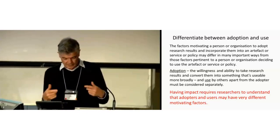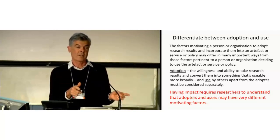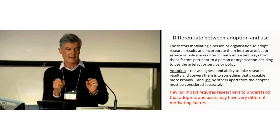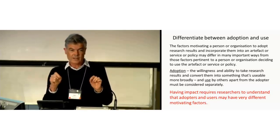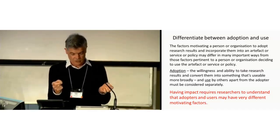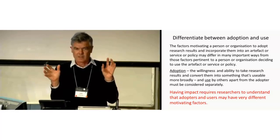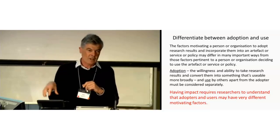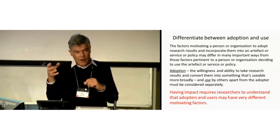The fundamental underlying issue to having impact is it requires people and organizations to change their behavior — they're going to do something new. The motivation to do that can be markedly different for different elements along that path to impact. Researchers need to understand these different motivations because that will influence how they go about their research. For example, a lot of people talk about policy impact, but policy doesn't have impact — implementation of policy has impact, and that requires program design, delivery, and the target population to change their behavior. The whole chain has to work.